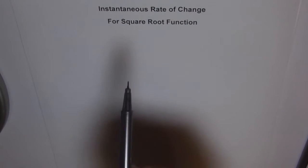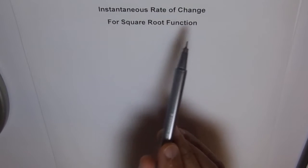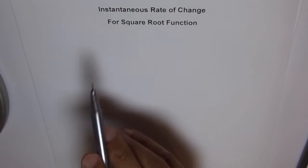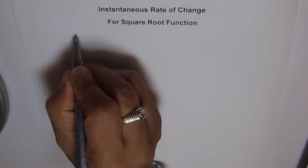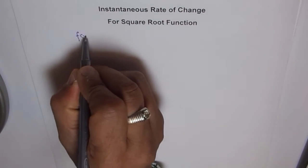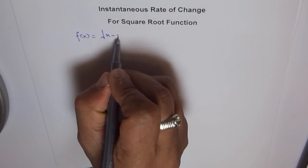Okay, this time we will analyze the square root function and find the instantaneous rate of change for a square root function. So let me write down a square root function for you. Let's have f(x) equals square root of x minus 1.